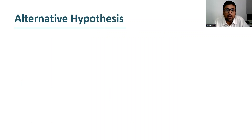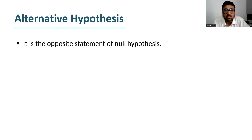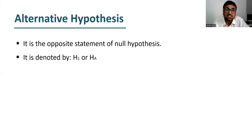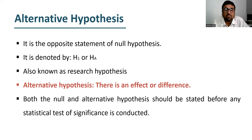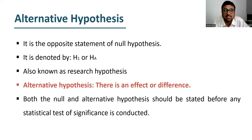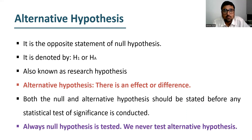Now let's understand the idea of alternative hypothesis. The alternative hypothesis is the opposite statement of null hypothesis and denoted by H1 or Hn — also known as research hypothesis. Alternative hypothesis says that there is an effect or difference between population parameter and sample statistic. Both the null and alternative hypothesis should be stated before any statistical test or significance is conducted, whether you conduct a T-test, F-test, chi-square test, or regression analysis. And we always test null hypothesis — we never test alternative hypothesis.